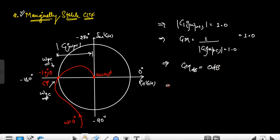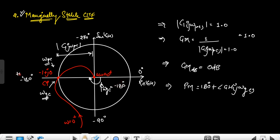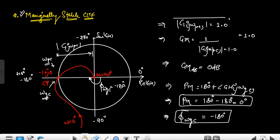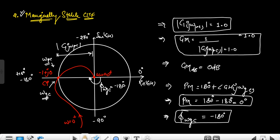For the phase margin in the marginally stable case, phase margin is 180° plus the angle at the gain crossover frequency. The angle at the gain crossover frequency is exactly minus 180°. So 180° + (−180°) = 0°. That's why the phase margin is exactly equal to 0°. For phase margin to be 0°, the angle at ωgc must be exactly minus 180°, and for gain margin to be 1, the magnitude at ωpc must be exactly 1. This is the marginally stable CLTF.